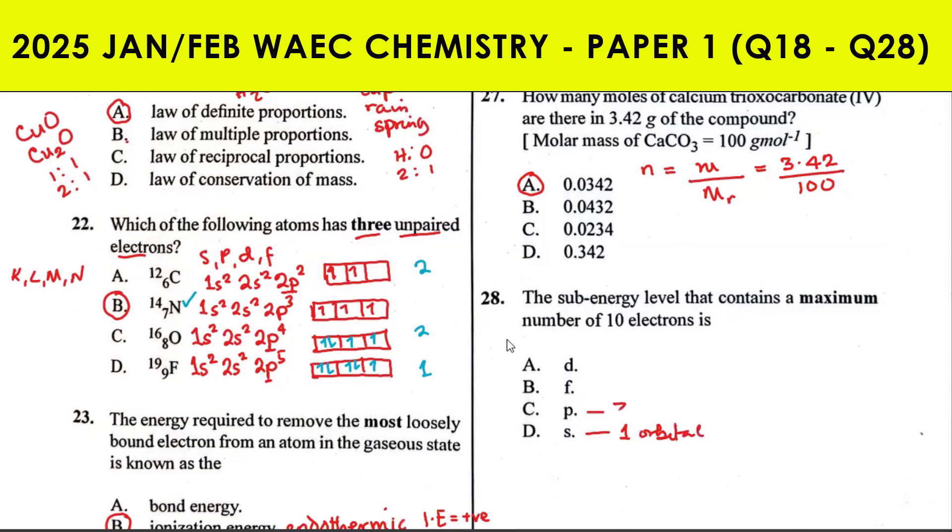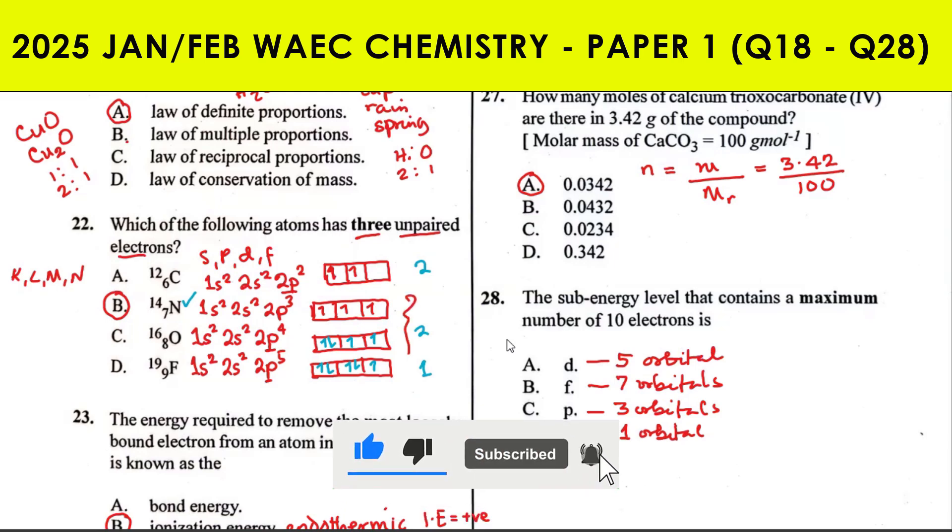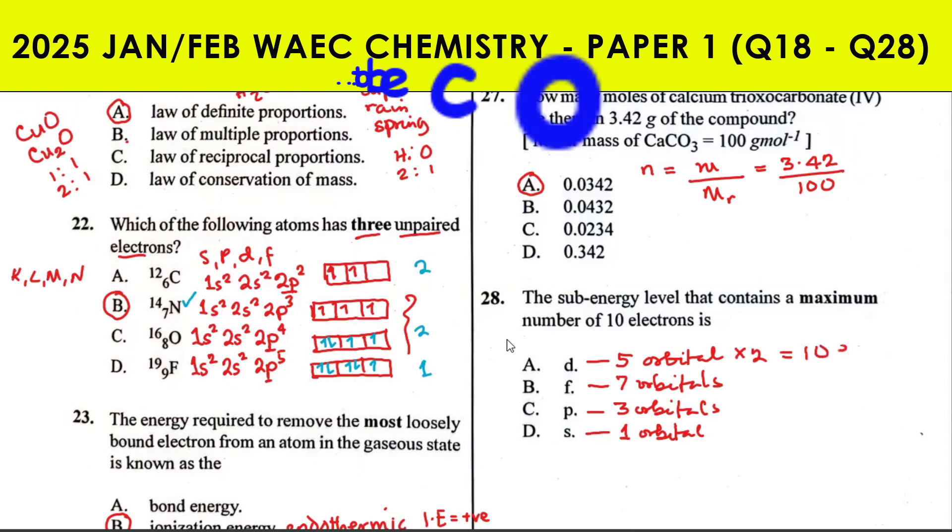This contains seven orbitals, and this contains five orbitals. Each orbital can take a maximum of two electrons. So 5 times 2 gives us 10 electrons, 7 times 2 gives us 14 electrons, 3 times 2 gives us 6 electrons, and 1 times 2 gives us 2 electrons.